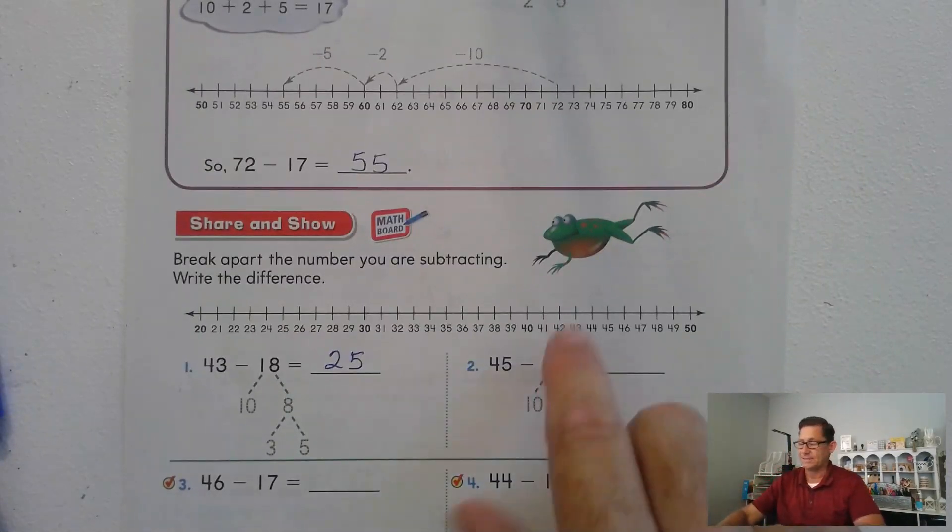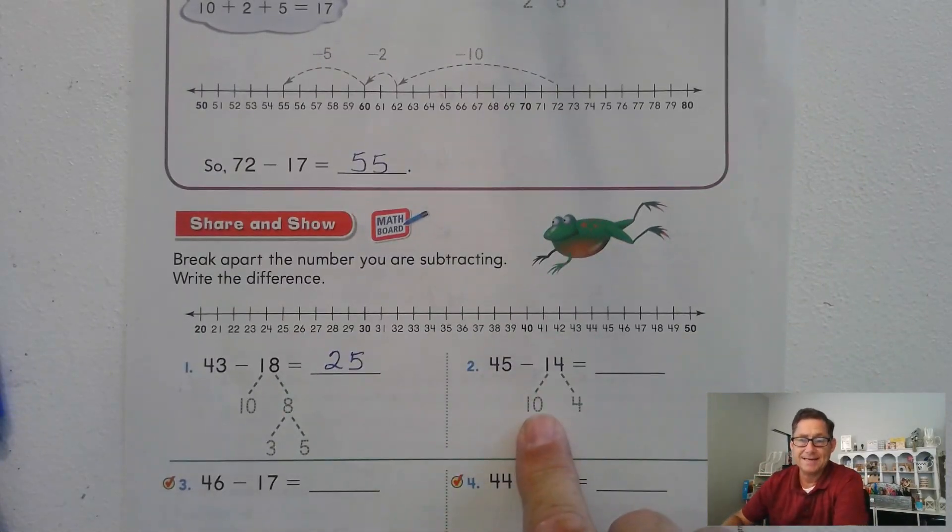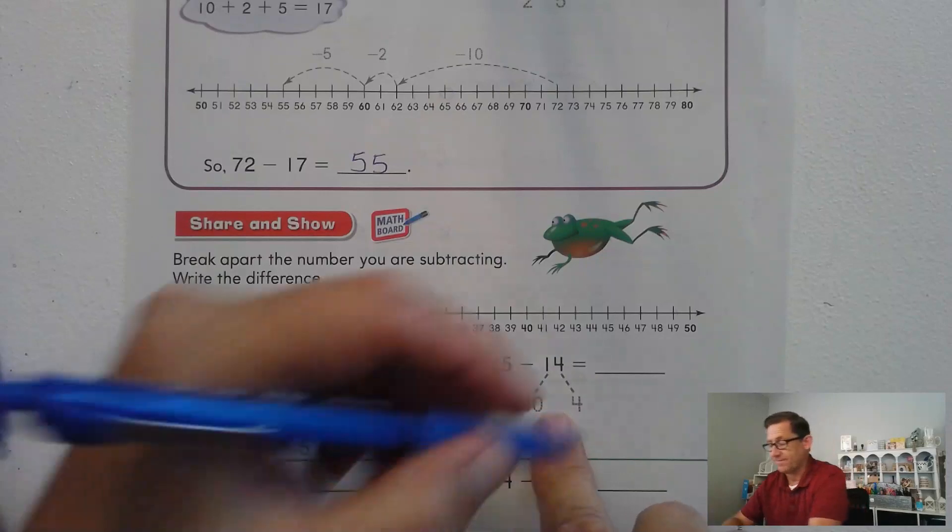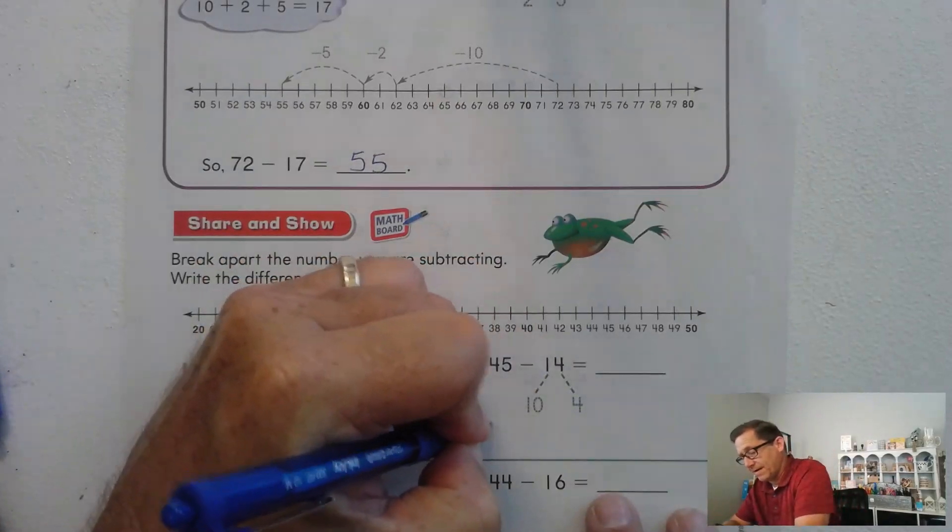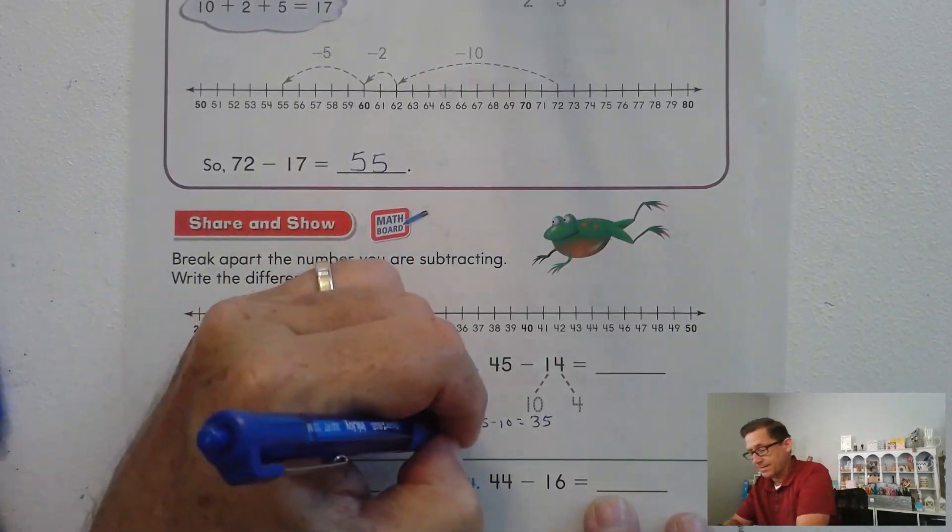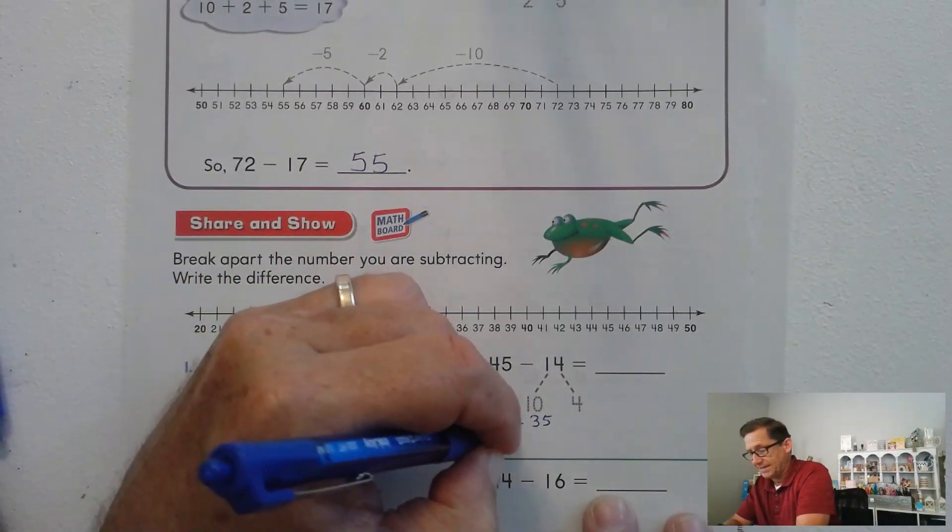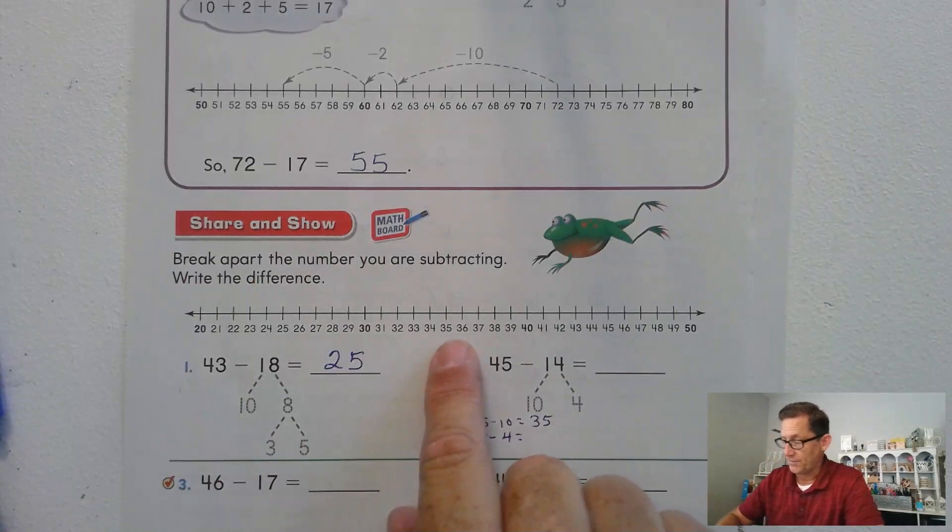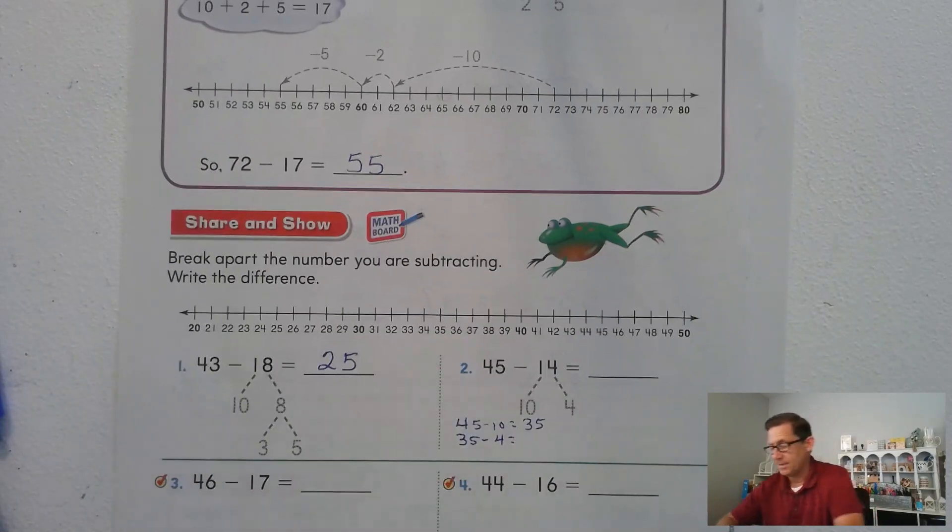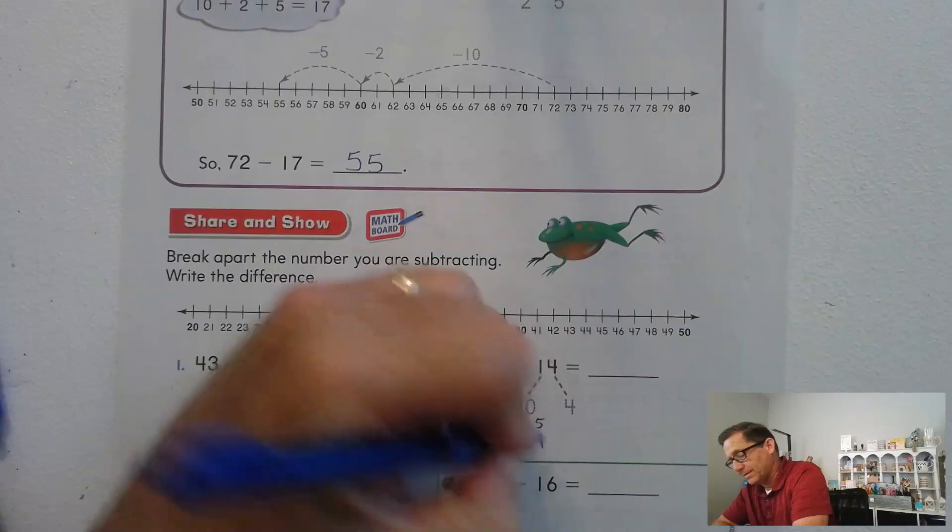45 minus 14. First, we're going to subtract 10 and then we're going to subtract 4. 45 minus 10 is 35, right? 35 minus 4. So we're at 35 and we have to subtract 4. Well, do I really need to use a number line for that? 5 take away 4. That's 1. So 35 take away 4 is 31.